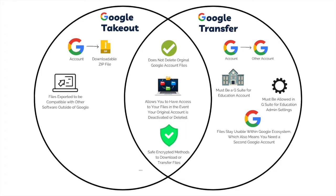With Google Takeout, the files are exported to be compatible with other software, but they're no longer Google-specific documents. One great feature of Google Takeout is it can be set to export on a time schedule to create regular backups. You can either do one export, or it will do six exports throughout the year — one every other month. You get to choose the frequency. Google Transfer, on the other hand, you're probably only doing once when you're ready to be done with that first original account and would like to move ownership to a second account that you manage.